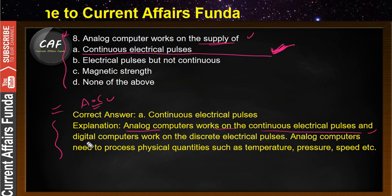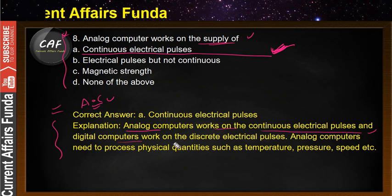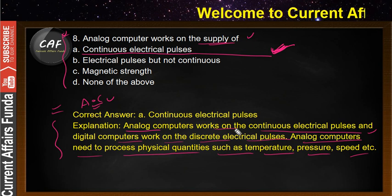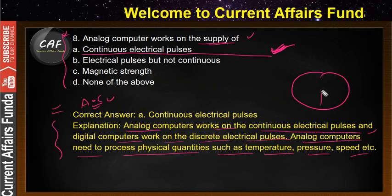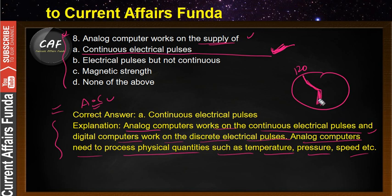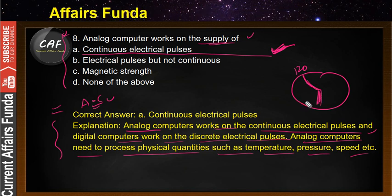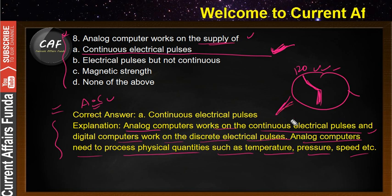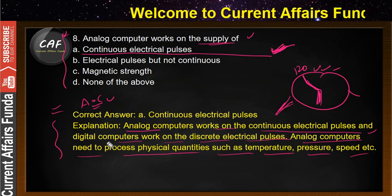A good example of an analog computer is a speedometer — if you are calculating speed, the speedometer converts your speed into a computer format. So a speedometer is an example of an analog computer. Keep writing down this theory.